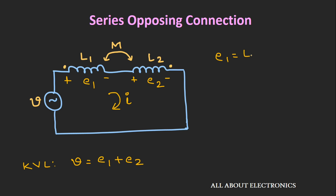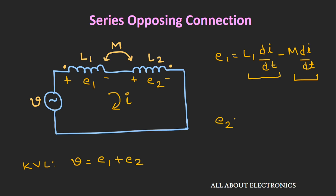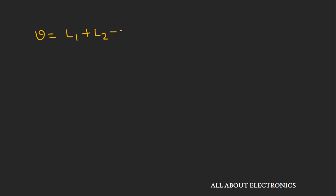Voltage E1 is given as L1 di/dt minus M di/dt. The first term is the self-induced voltage in the first inductor, and the second term is the voltage generated due to mutual coupling with the second inductor. Since the inductors are in a series-opposing connection, the polarity of the second term is negative. Similarly, E2 equals L2 di/dt minus M di/dt. Adding both voltages, V equals (L1 plus L2 minus 2M) into di/dt.